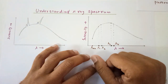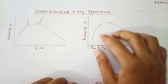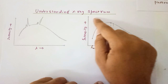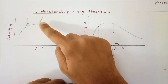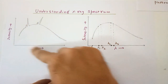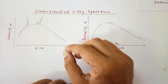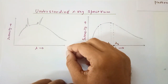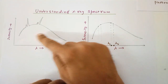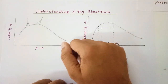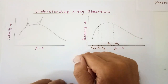Hello scientific people, how are you today? Today we are going to understand the X-ray spectrum. The X-ray spectrum is a graph of intensity versus wavelength for the X-ray photons which are being emitted in the Coolidge tube, where intensity means the number of photons released corresponding to a particular wavelength.